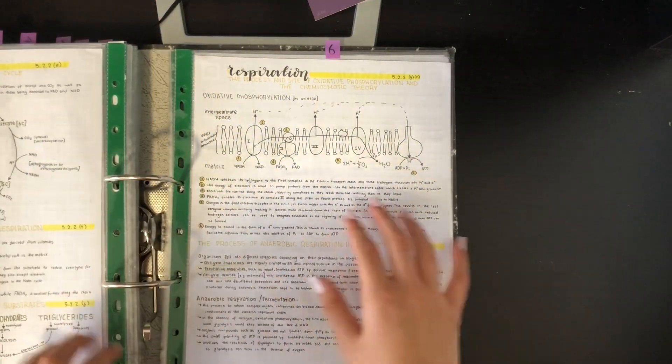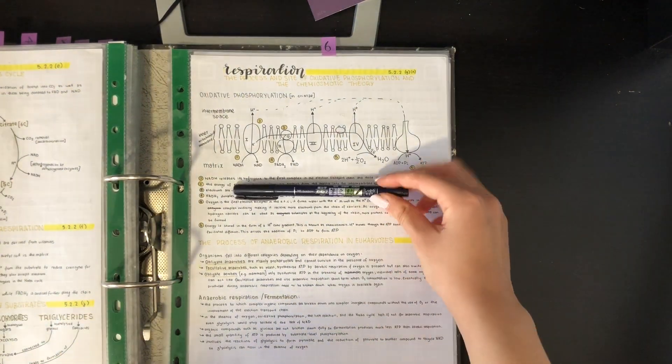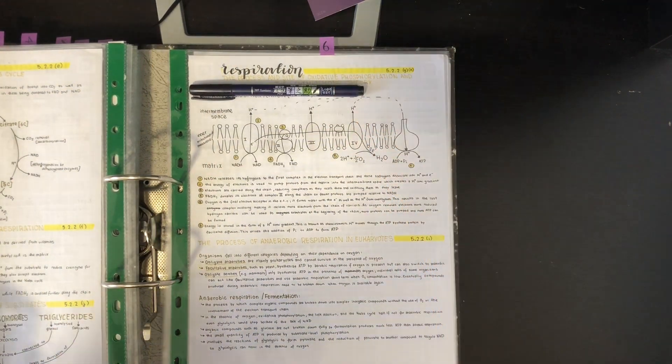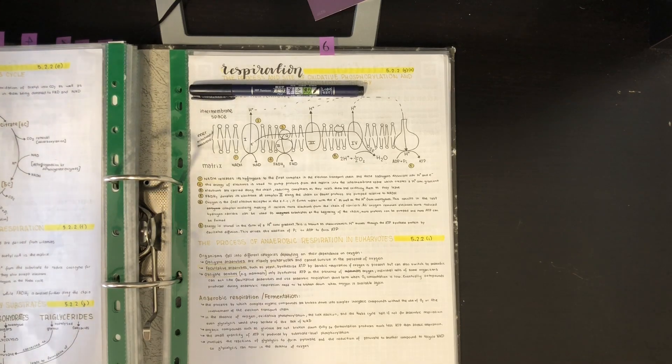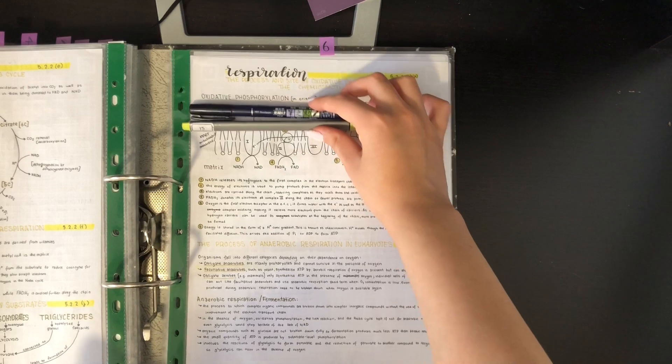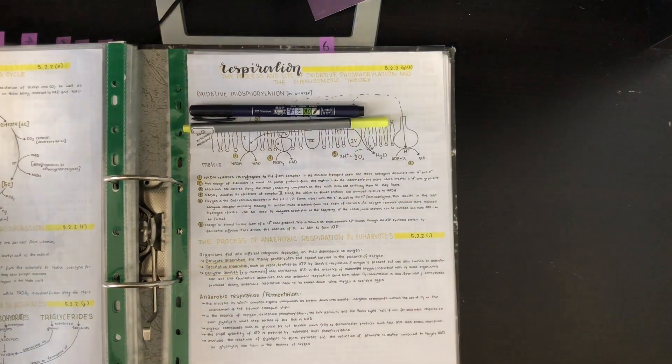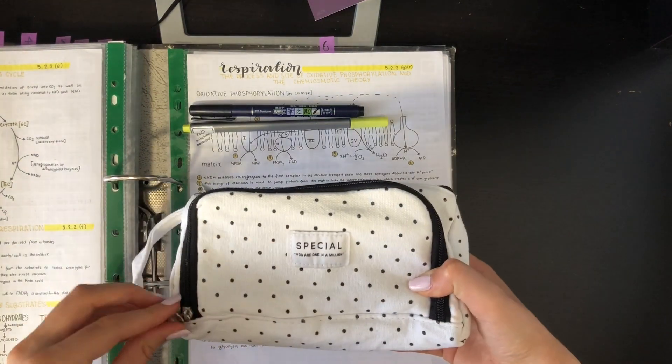So here is the topic of respiration. This particular section is on oxidative phosphorylation. And what I use for my titles is the Tombow Furunosuke brush pen. And I just do a little simple calligraphy just to make it really cute. And I also get a little accent art as a fine liner for the headings and anything I want to underline or color in.